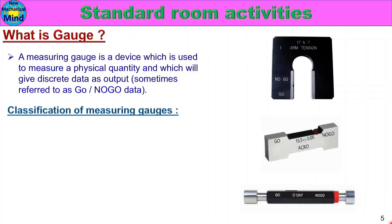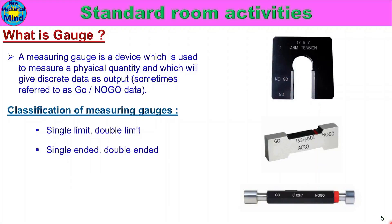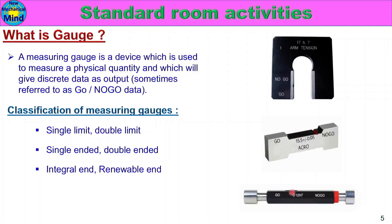Classification of Measuring Gauges. There are classifications: Single Limit and Double Limit. One side is go and the other side is no-go — that is Single Limit. Double Limit means both sides are used. Also: Single Ended and Double Ended — a double-ended gauge uses two ends, a single-ended uses one. And Integral End versus Renewable End — an integral end is fixed, while a renewable end can be replaced.